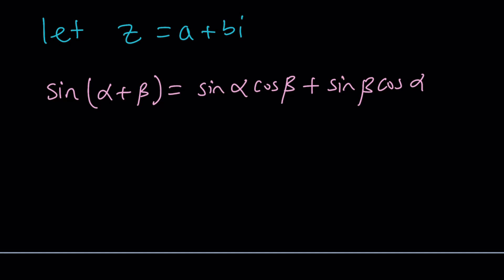But what if I replace alpha with a and beta with bi? Let's plug it in. Sine of a plus bi is going to equal sine of a cosine of bi plus sine of bi times cosine of a. If you don't mind when I don't use parentheses, I hope this is understood. If it's not then I'll use parentheses.